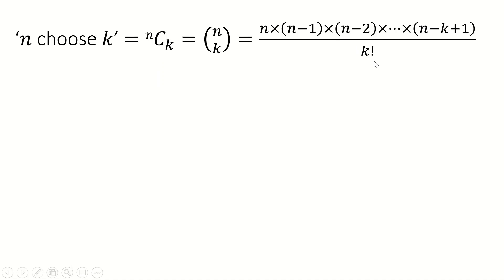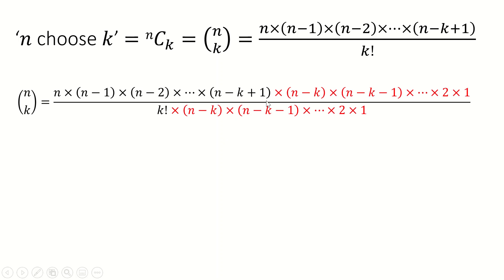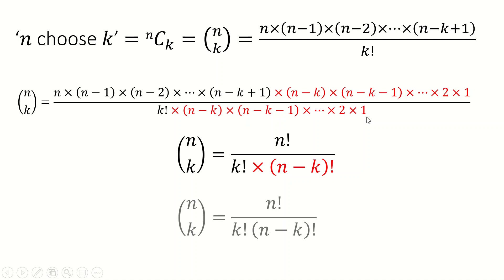Now I'm going to do a very similar thing to what I did before: I'm going to add on a bunch of stuff to the end to give myself nice factorials. The next term after n minus k plus one would be n minus k, then n minus k minus one, all the way down to two and one. I multiply the bottom by exactly the same thing to keep the fraction equal. Now the top is just n factorial — n times everything below it down to one. The bottom is k factorial, and this red bit is just n minus k factorial. So that's our formula for n choose k.